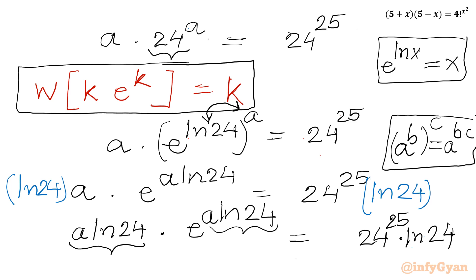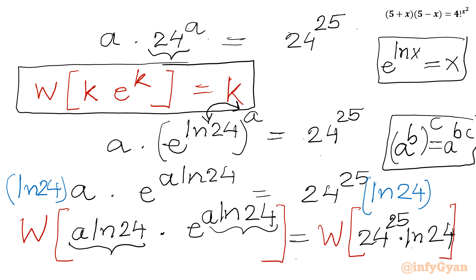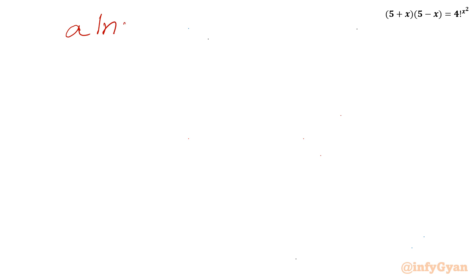Now I will take the Lambert W function of both sides. Left hand side, as per our property W(k·e^k) = k, gives us a·ln 24. Right hand side will be W of 24 to the power 25 times ln 24. Now we need to simplify this right hand side. I will write 24 to the power 25 as 24 to the power 24 plus 1, times ln 24.